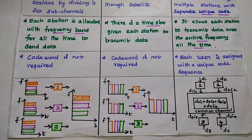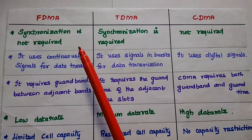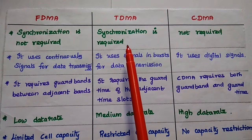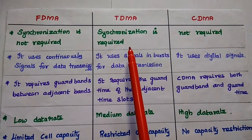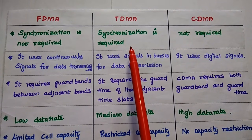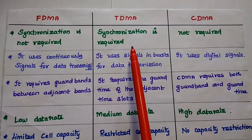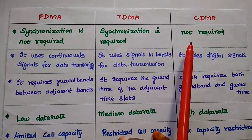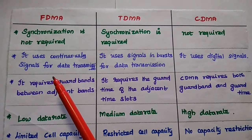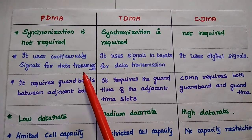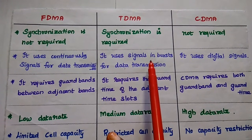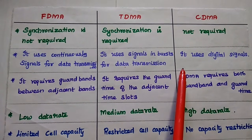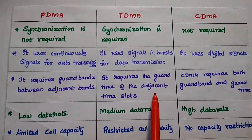In FDMA, synchronization is not required. But for TDMA, synchronization is required between different earth stations, because each station must be aware of the beginning of its time slot and the location of the time slot — synchronization is a must for TDMA. For CDMA, it is not required. FDMA uses continuous signals for data transmission. TDMA uses signals in bursts, that is digital signals. CDMA uses entirely digital signals.